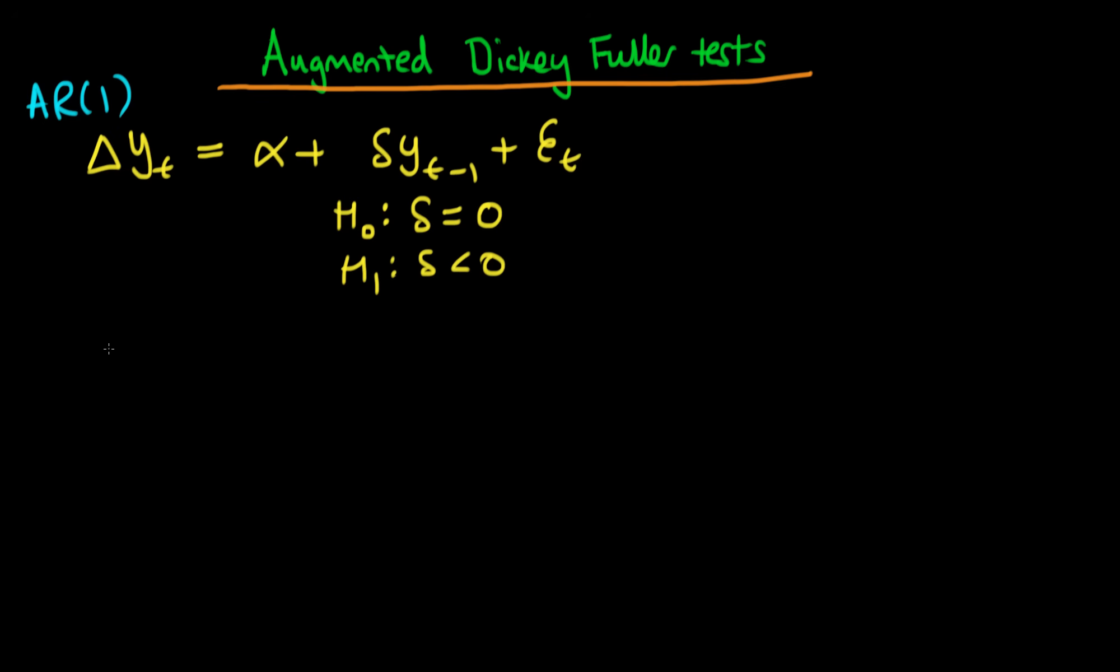Well, if we thought that y_t followed an AR2 process, we might think we would regress Δy_t on alpha plus delta times y_{t-1} and then include something with y_{t-2}.